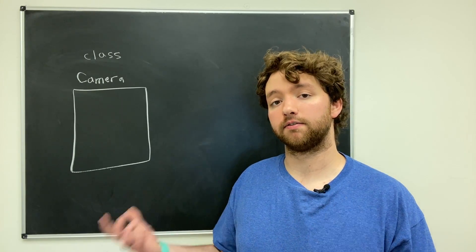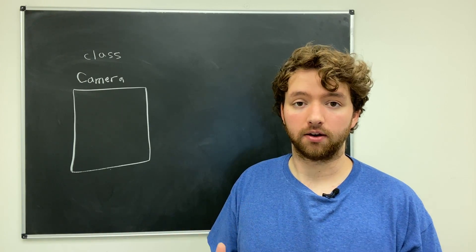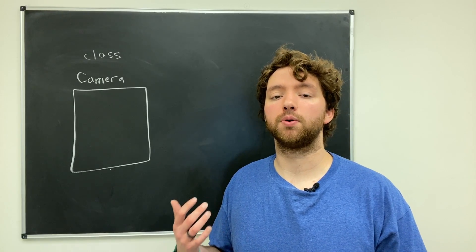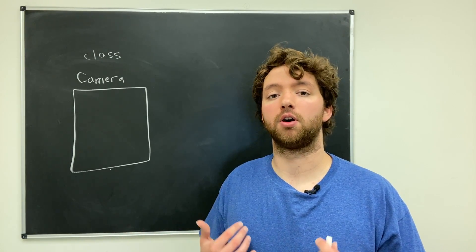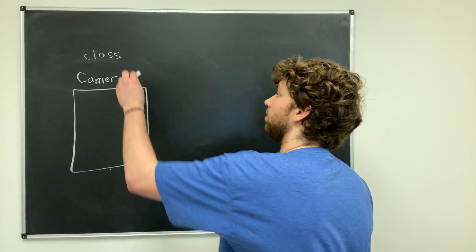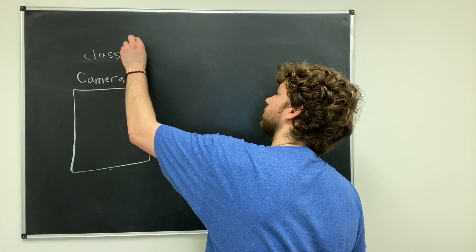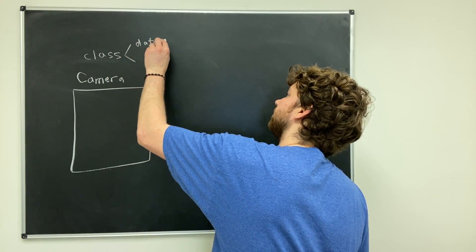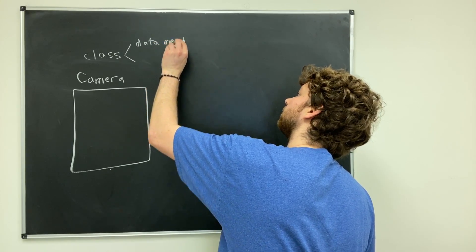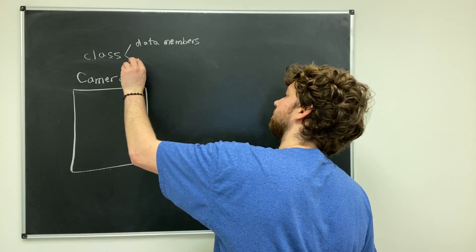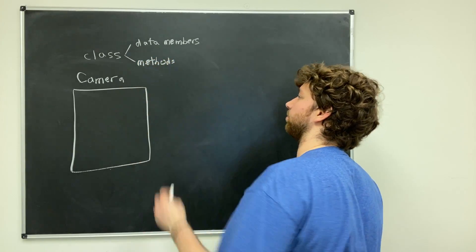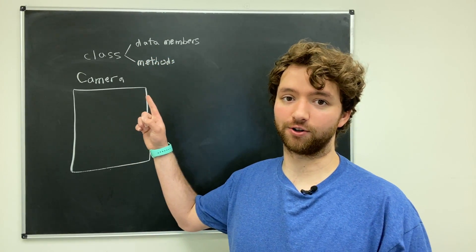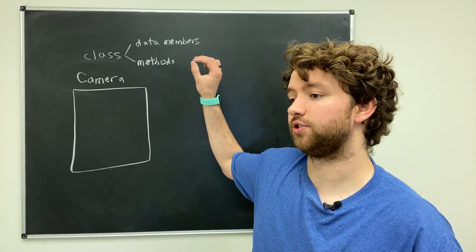It's going to have variables or what you would say are data members, and then you're going to have functions, which in the context of object-oriented programming are known as methods. Data members and then methods, which again is just an object-oriented way of saying function—it's a function to describe a specific thing dealing with cameras.